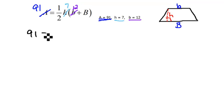Let's rewrite this formula using those numbers. So we would have 91 equals 1 half times 7 times the 12 plus B. Now at this point, there are several different ways that you could approach this problem. As long as you're using valid math rules, then there are a lot of different ways that you could do it. We could distribute the 7 first if we wanted to.